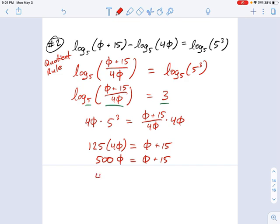Subtract φ from each side, we get 499φ equals 15. If this φ is annoying anybody, remember it's just a variable. If you want, you could always rewrite these things as x or whatever your preference is. And then φ equals 15 over 499. So that's going to be our solution to this equation.